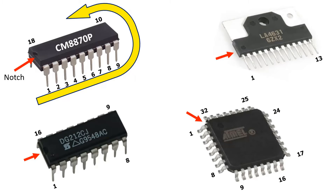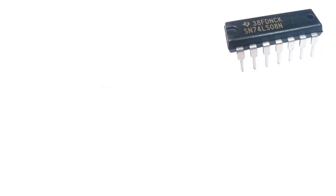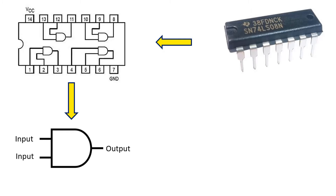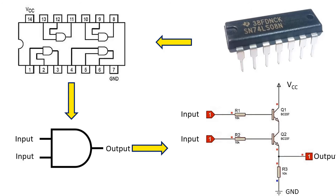Now let's look at what the internal structure of an integrated circuit is like. For example, let's look at how the internal structure of the 74LS08 is integrated. As you can see, this IC has a total of 14 pins. When we look at the internal structure, we see that there are four logic AND gates. This logic gate has two inputs and one output. If both inputs are logic 1, that is 5 volts, the output becomes logic 1, that is 5 volts. If any of the inputs is logic 0, the output is logic 0. When we go into a little more detail and look inside an AND gate, we can see that there is a circuit consisting of two transistors and resistors inside this gate.